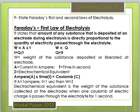Q is equal to I multiplied by T — current multiplied by time. The quantity of charge passed depends on the ampere and is multiplied by time. W is the weight of the substance deposited at the electrode.